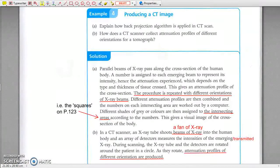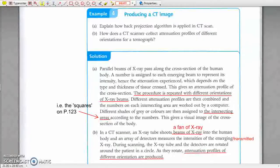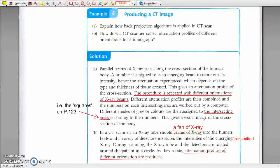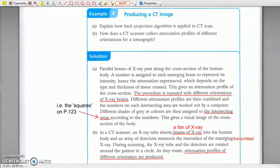Example 4. Producing a CT image. Read the solution carefully. Check if you have any misunderstanding of the whole process of back projection algorithm.